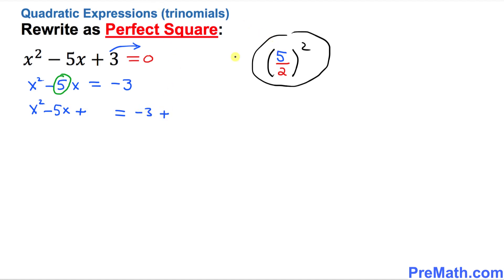Now I'm going to write it down, 5 over 2 square on the left hand side and I'm going to do 5 over 2 square on the right. I added it to both sides.